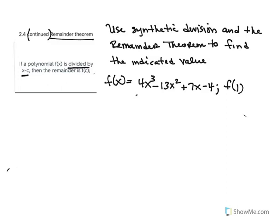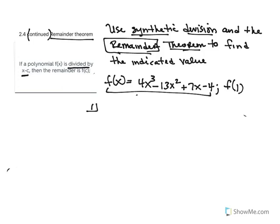When working problems dealing with the remainder theorem, the instructions tell you what to do — which is why vocabulary is important. Use synthetic division and the remainder theorem to find the indicated value. We have the given function and they want us to identify f(1). We make 1 our shelf number. We do not have to change the sign because it's not in the x minus c form — they're actually giving it to us as f(c), so c is just 1.